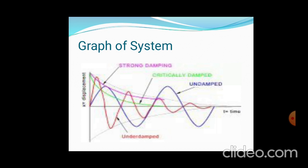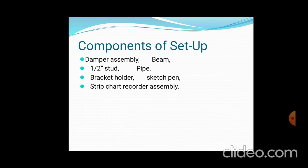Looking at the typical graph of these systems: pink shows strong damping where vibrations go on decreasing; green shows critically damped, returning to original conditions after some time; undamped maintains nearly the same amplitude throughout; and underdamped shows amplitude going on decreasing. These are the components available: damper assembly, stud system, bracket holder, strip chart, sketch pin, and beam.